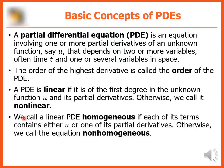We call a linear PDE homogeneous if each of its terms contains either u or one of its partial derivatives. Otherwise, we call the equation non-homogeneous.